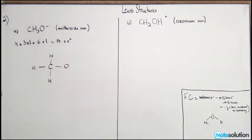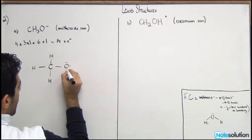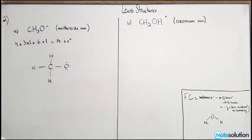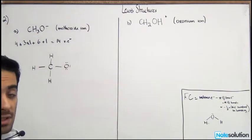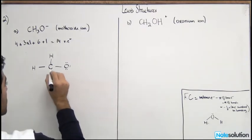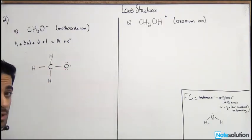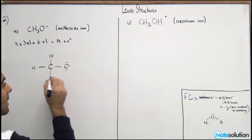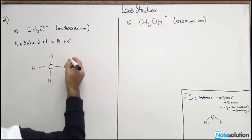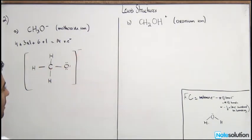We've used eight of our 14 valence electrons, leaving six. The leftover electrons are used to fill the octet of terminal atoms first, then the central atom. Each H has two electrons, oxygen has eight, and carbon has eight — all satisfied. Remember to put the negative charge on the bracket. This is the Lewis structure for methoxide ion.